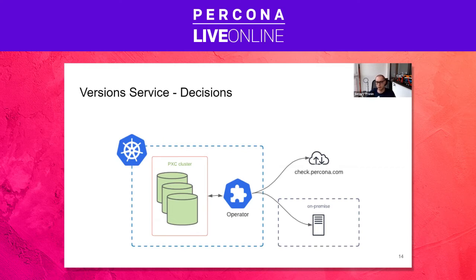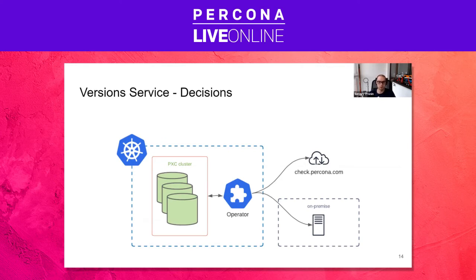So we decided to create a public checks.percona.com - we call it the version service. It is open source software and can be installed on-prem if there is an air-gapped environment where users don't trust what checks.percona.com ships. What it does: the operator queries the version service with its current version and asks what the recommended versions are. The version service replies, and the operator then loads the latest Docker images from the repository and applies them in graceful rolling upgrade mode - one by one with no downtime. This works for proxies, databases, and PMM - Percona Monitoring and Management. And since it's open source, it can be installed on-prem.